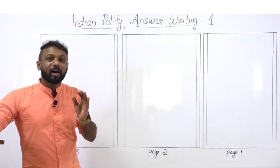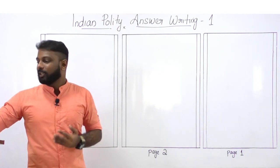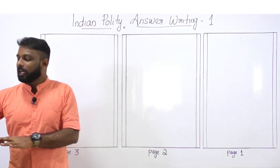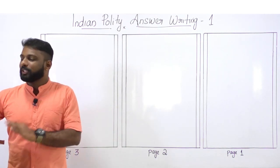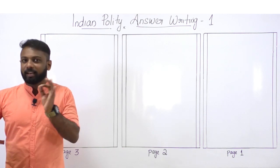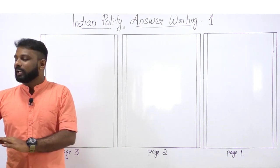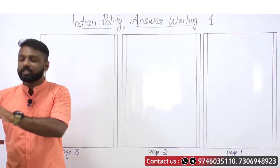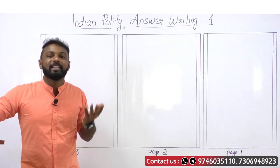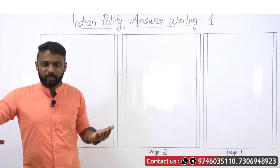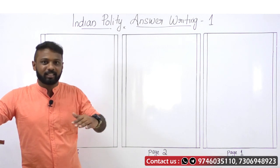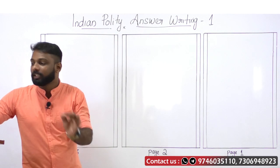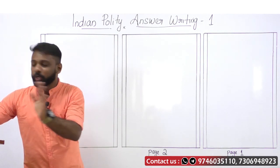Now let's understand the demand of the question — what UPSC demands from us. The question relates to Indian federalism. The federal principle is dominant in our Constitution, so this question is regarding the concept of Indian federalism. We know that India is a federal country, meaning there is a clear demarcation of power between the central and state governments.